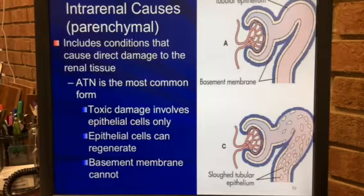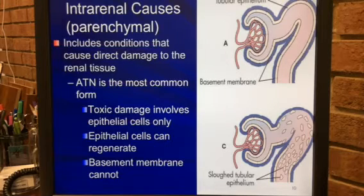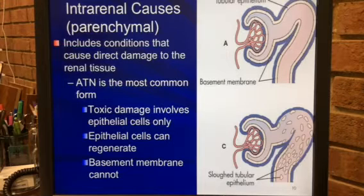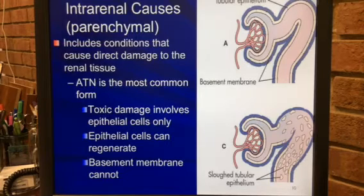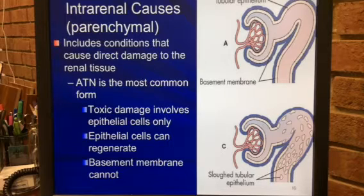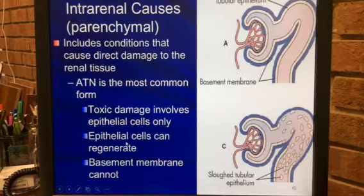Intrarenal causes include conditions that cause direct damage to the renal tissue. In those pre-renal situations, if that is not reversed or corrected in a timely manner, that will produce intrarenal damage by virtue of damaging the kidney structures in an ischemic way. Acute tubular necrosis is the most common form of intrarenal kidney failure.